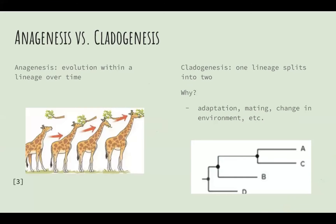There are two types of evolutionary change: anagenesis and cladogenesis. Anagenesis is the evolution within a lineage over time.